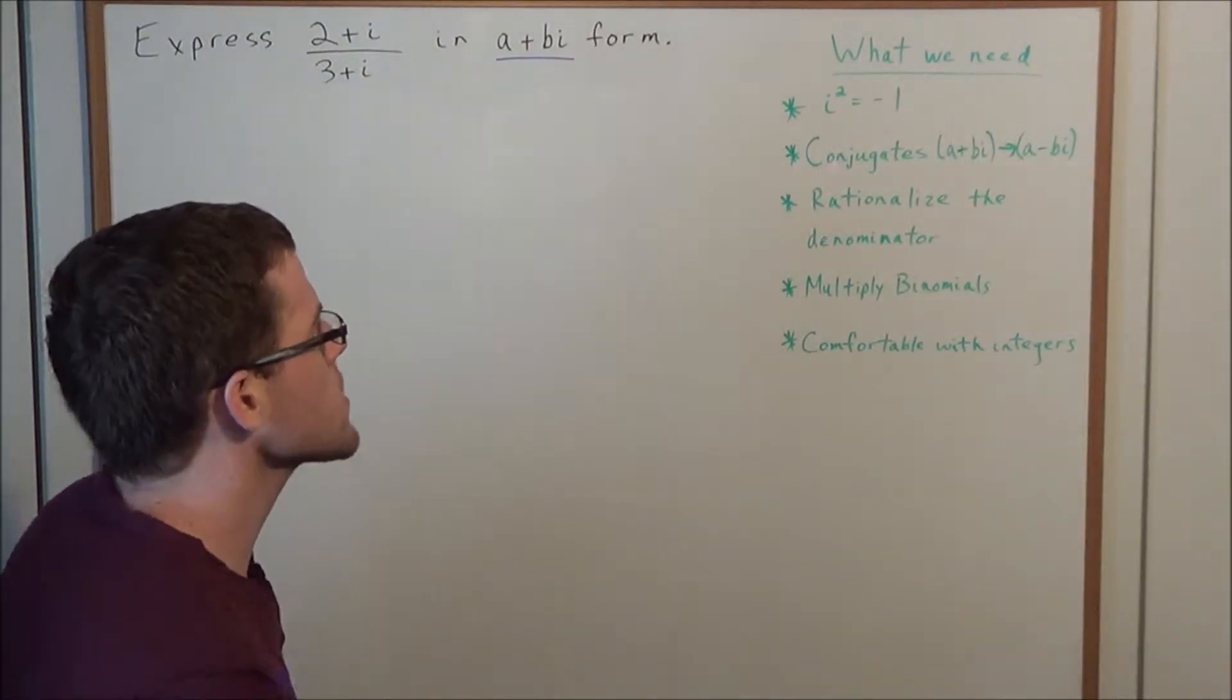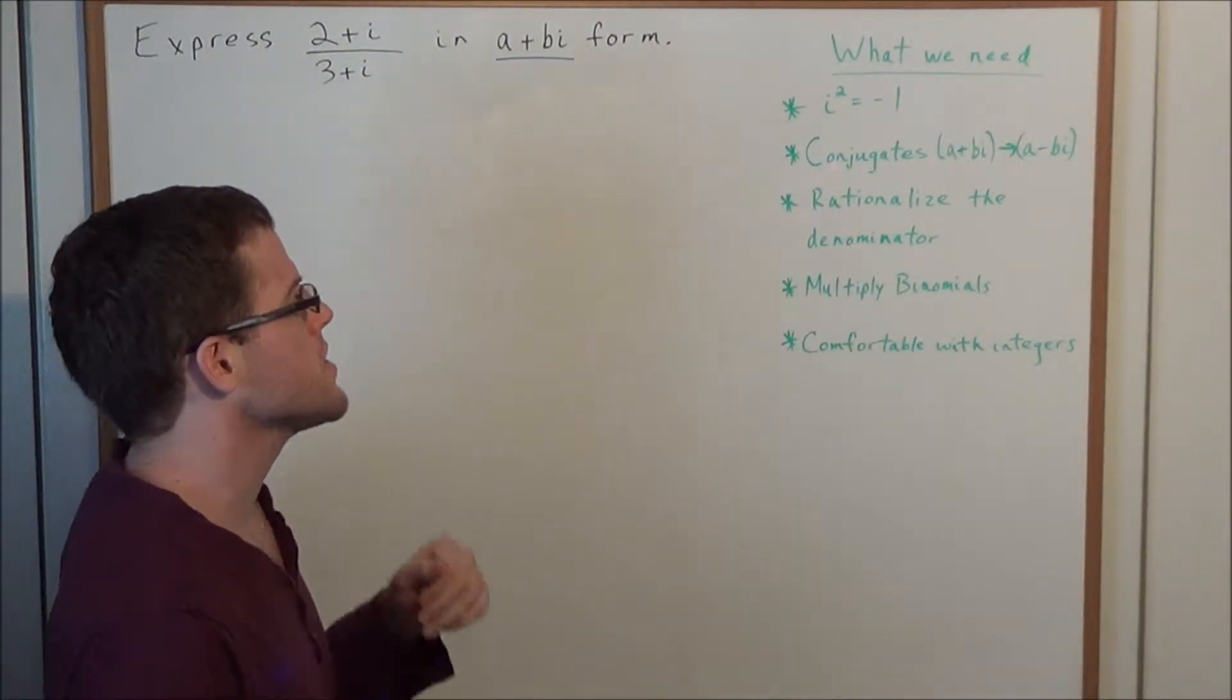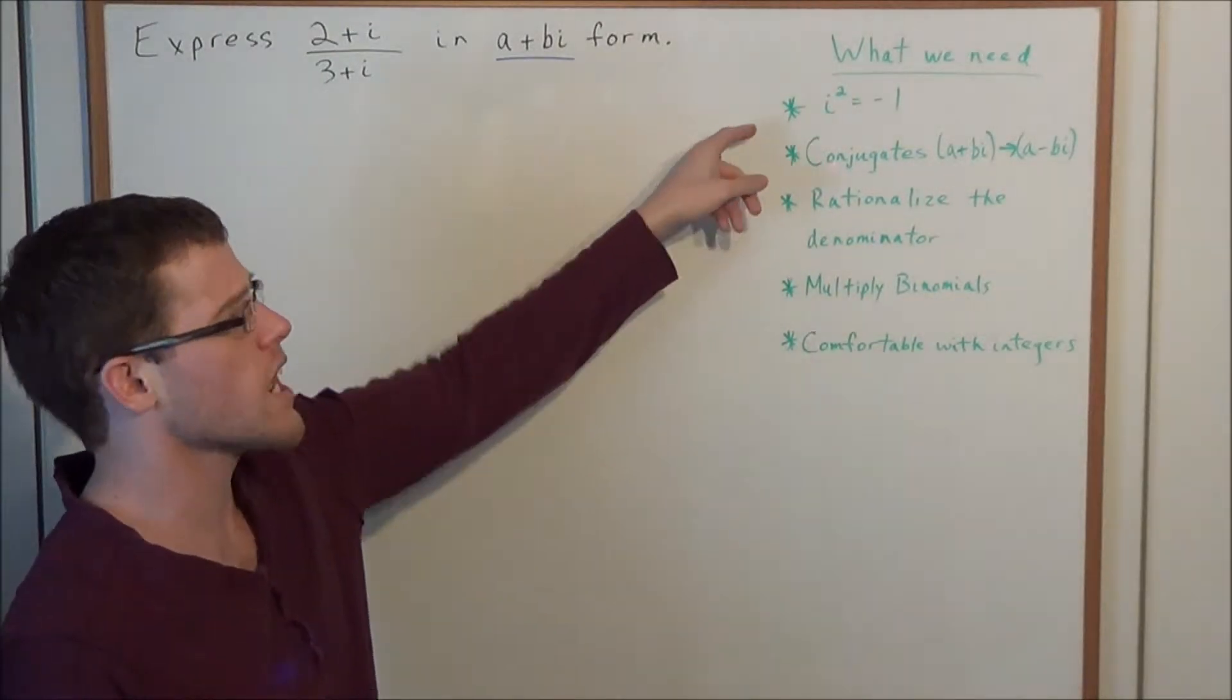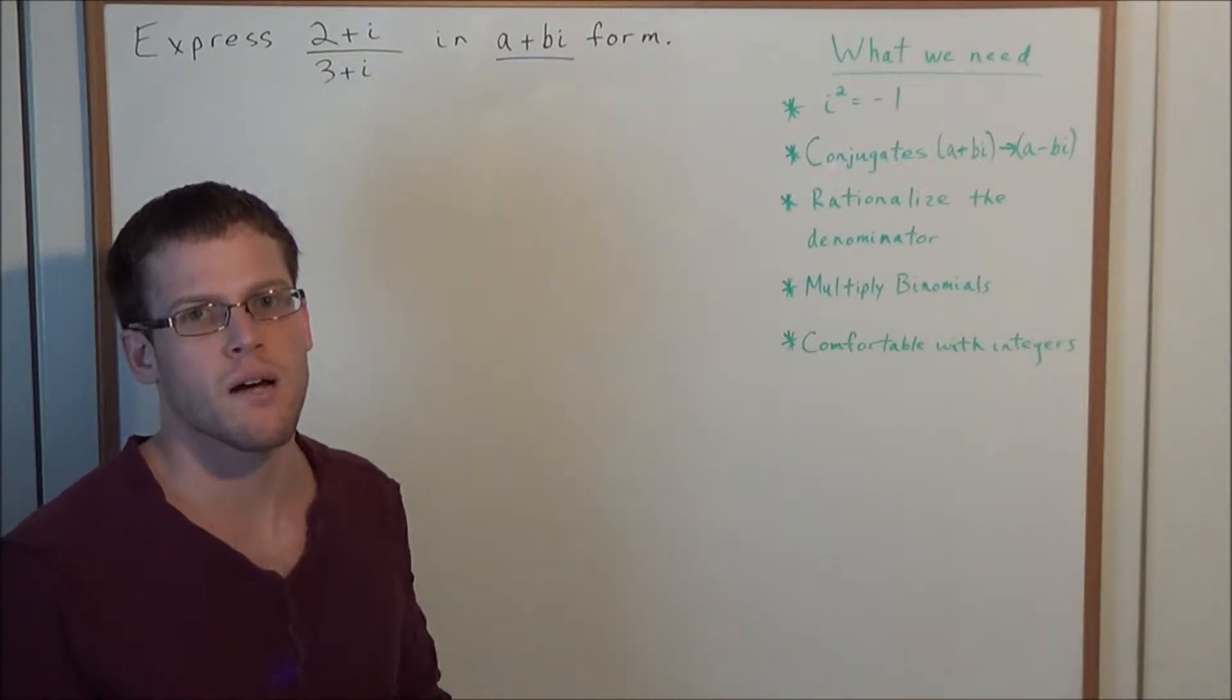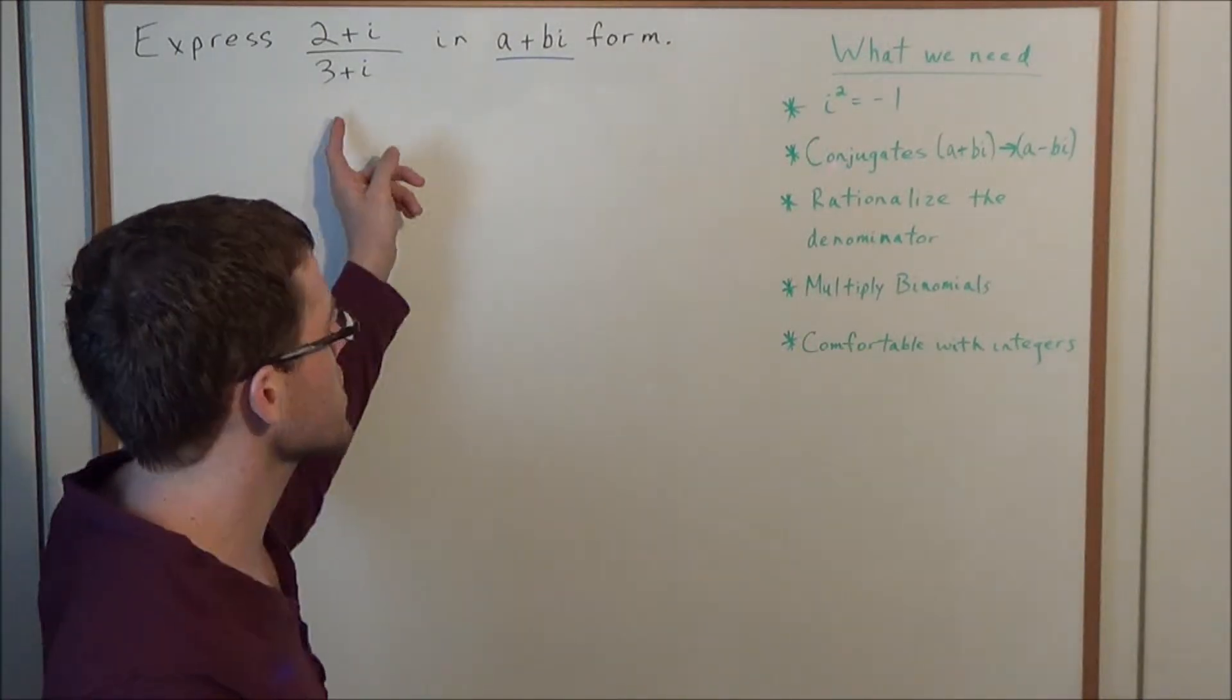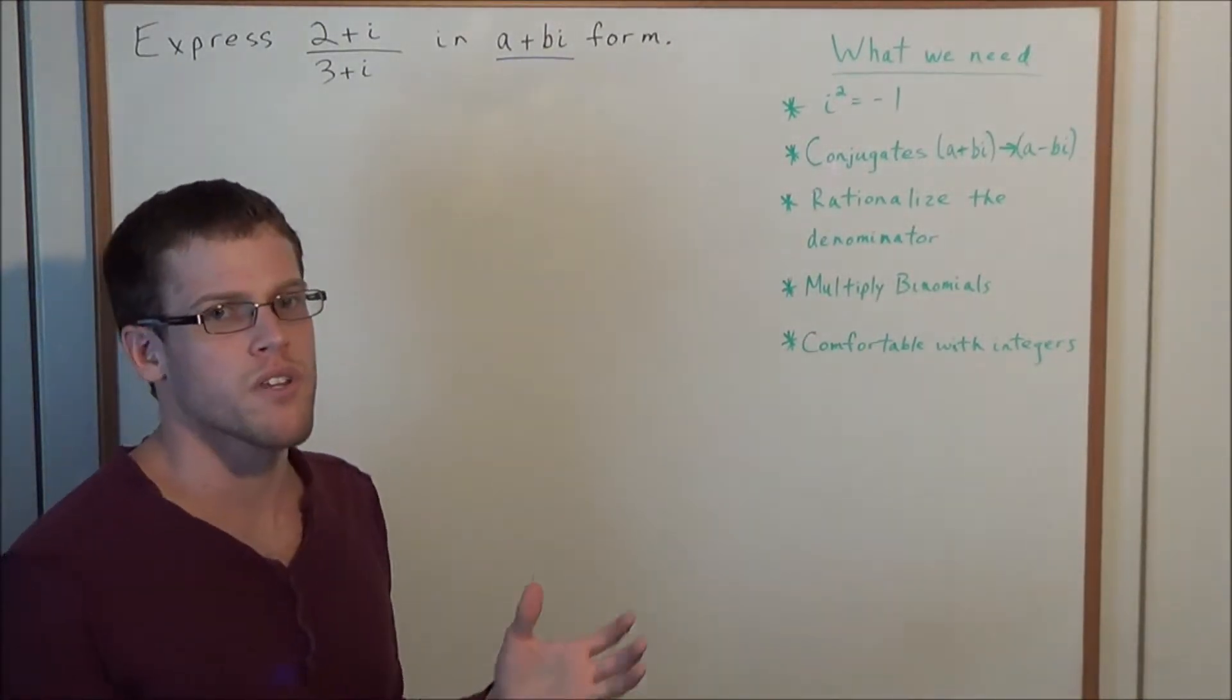Now before we get started, let's take a look at what we need to solve this. We're going to need the fact that i squared equals negative 1. This fundamental definition allows us to say a lot about the complex numbers. So to try a problem like this without that definition, we wouldn't get very far.